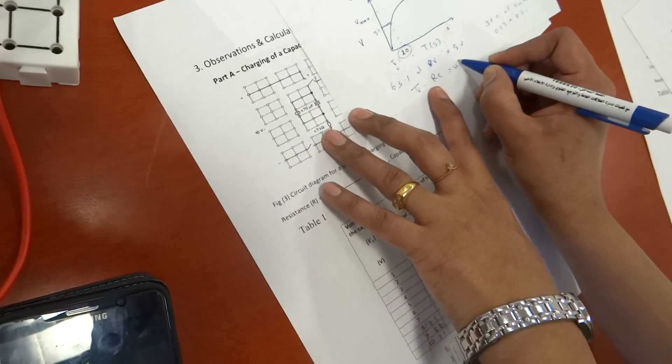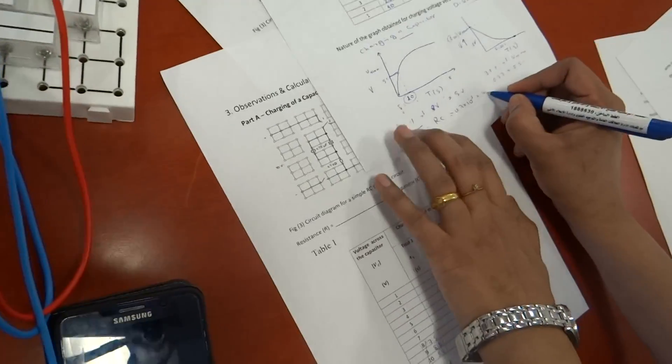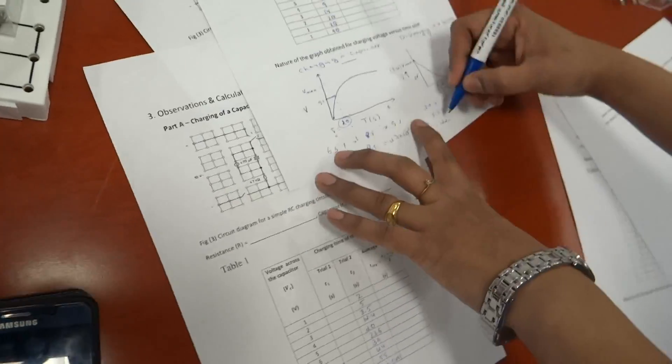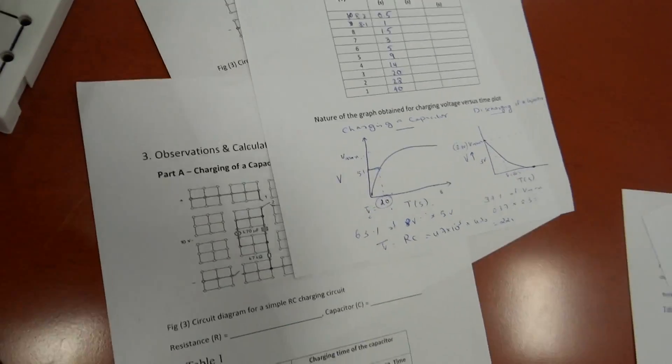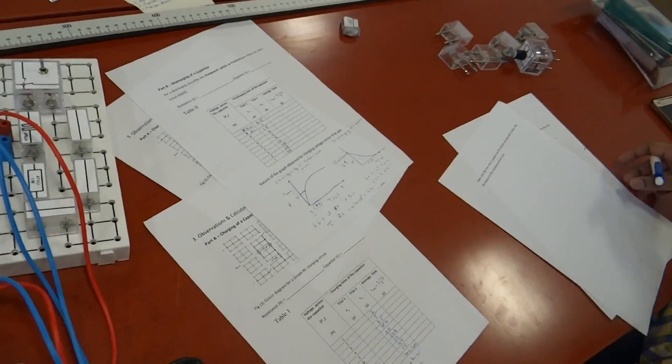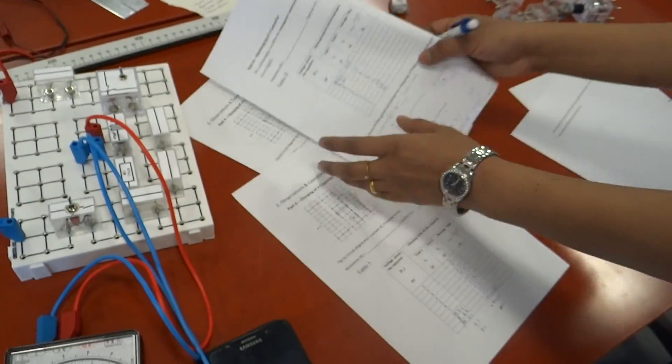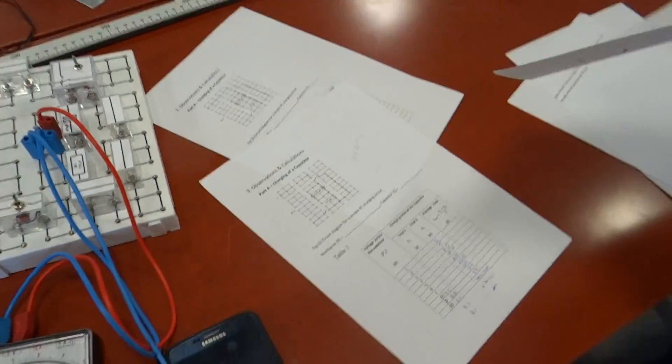Tau equals R times C. Just multiply the value of R, 47 times 10 to the power minus 3 kilo ohm, multiplied by 470 microfarad. This will give 22 seconds. So experimentally, both are matching. 20 and 22 is okay. You can also calculate the tau, which is RC. You have the value of R and the value of C, so you can calculate the tau.